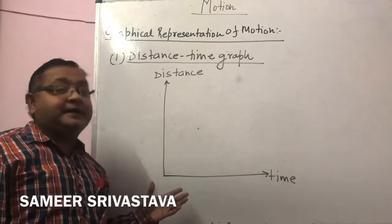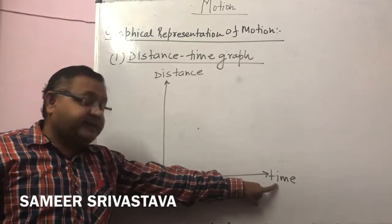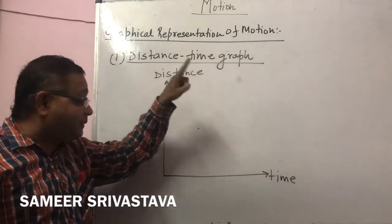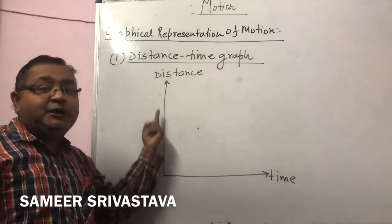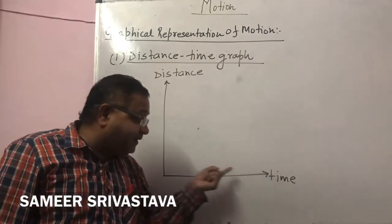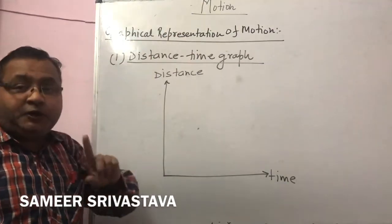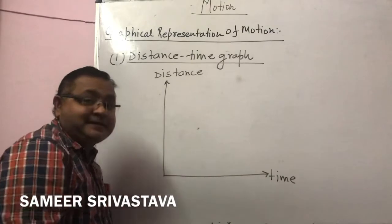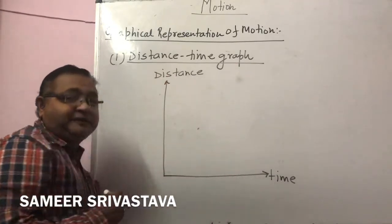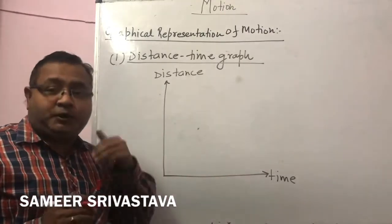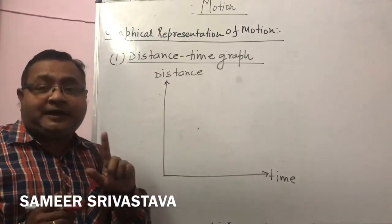The question arises why. Because when the time changes, the object's position will also change. It means distance depends upon time. The variable which depends upon another variable is always shown along the y-axis, and the independent variable is always shown along the x-axis. So when we make a distance-time graph, we always represent time along the x-axis and distance along the y-axis.